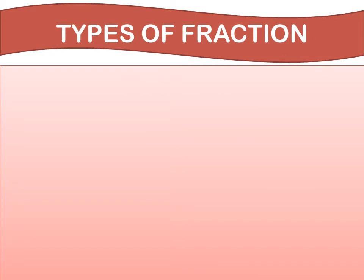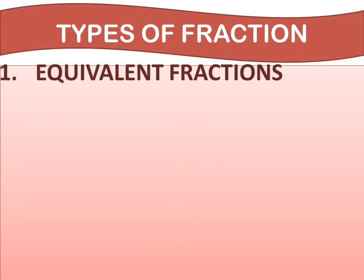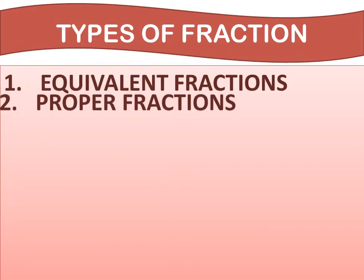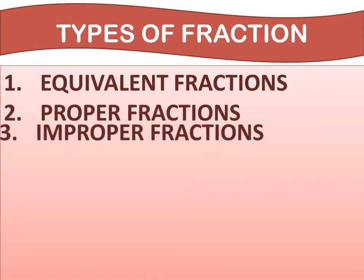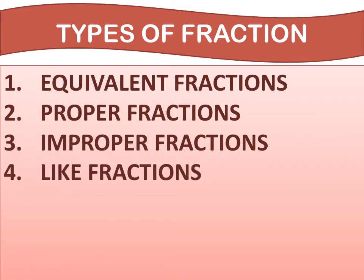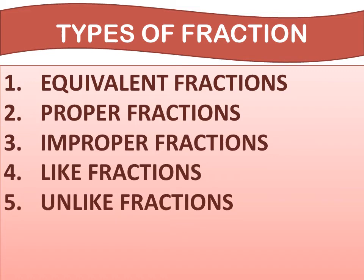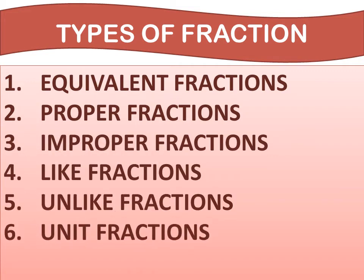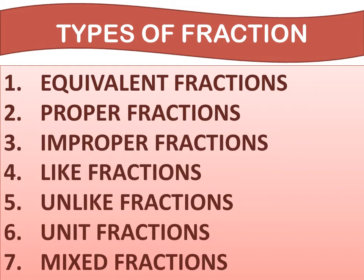Our next topic is Types of Fractions. There are 7 types of fractions: Number 1, equivalent fractions. Number 2, proper fractions. Number 3, improper fractions. Number 4, like fractions. Number 5, unlike fractions. Number 6, unit fractions. Number 7, mixed fractions. Let me explain you one by one.